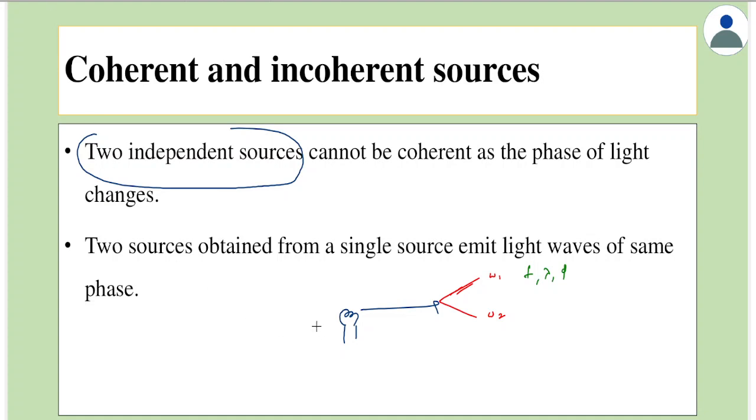So the only practical way of obtaining two sources which are coherent is by dividing a source into two waves. This is done in many ways. The simplest way is something called as division of wave front. That is done in something called as Young's double slit experiment. We will do it later. For now, understand that two independent sources cannot be coherent. And therefore, we take a single source and get two waves out of it. This is called as coherence in case of light.